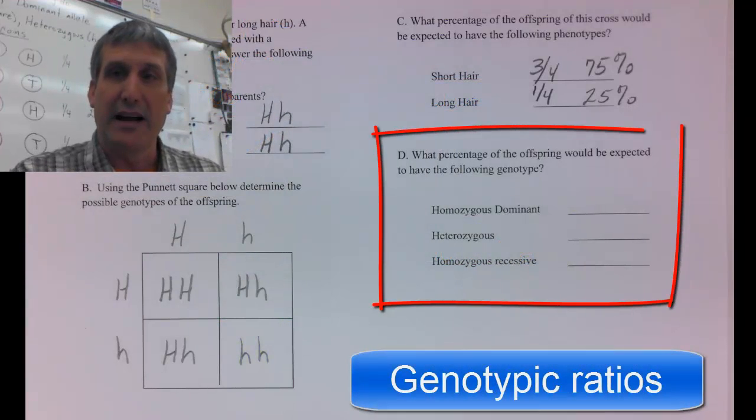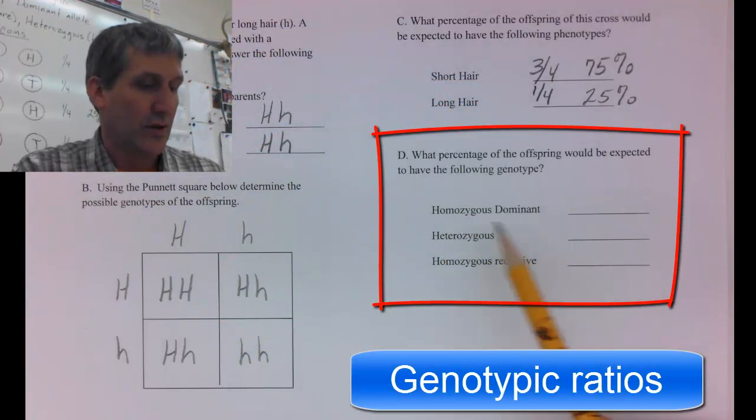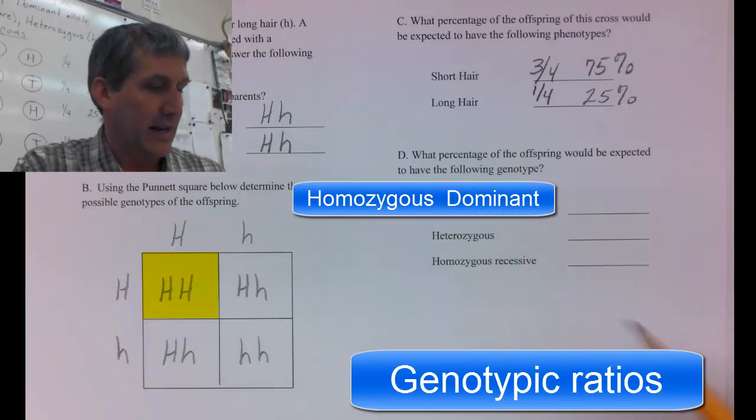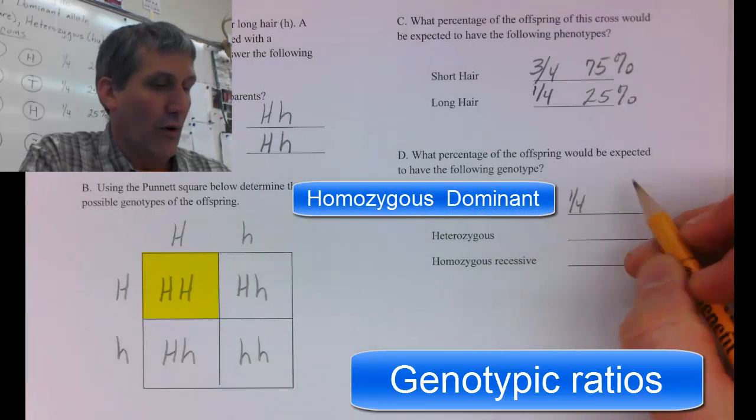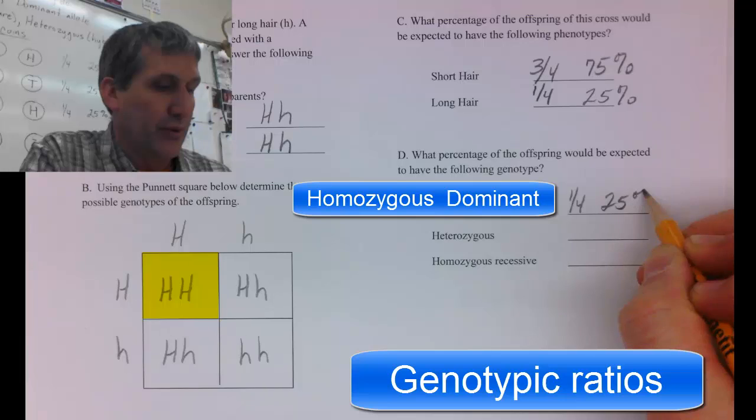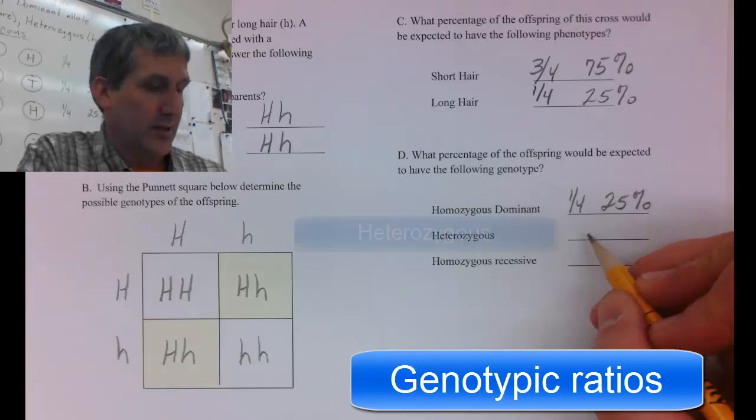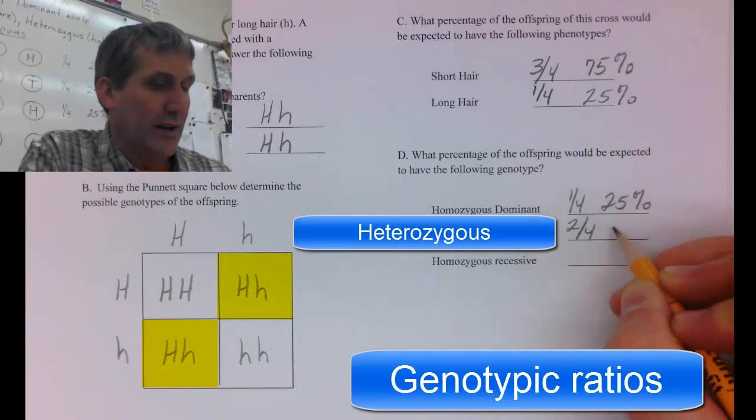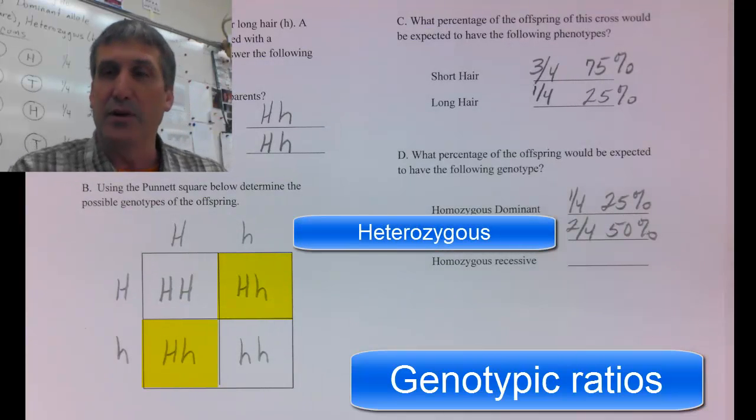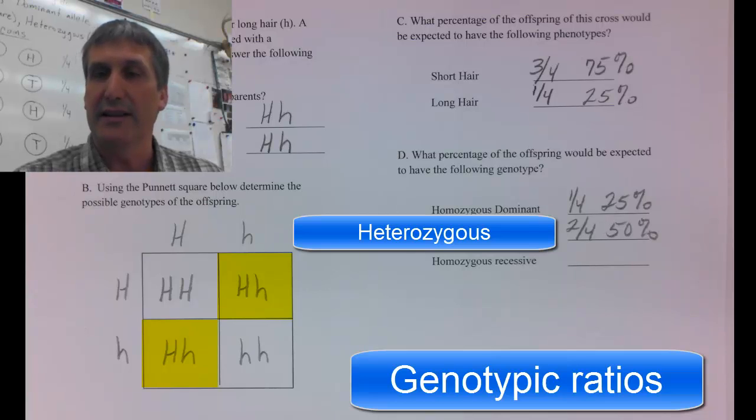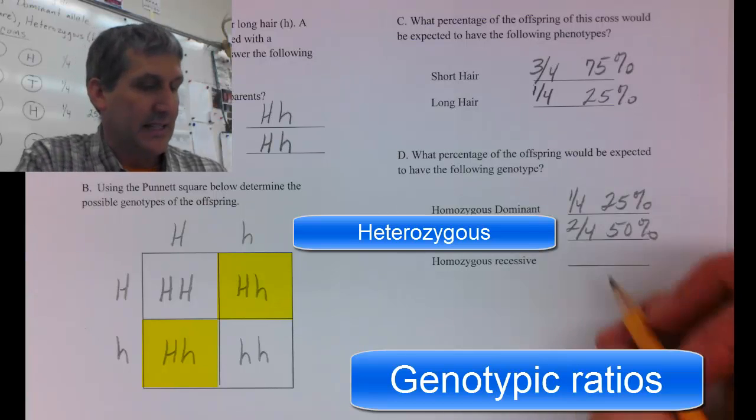You can also figure out the genotypic ratios. Homozygous dominant is one out of four times or 25%, you would expect the offspring to inherit the genotype homozygous dominant. Two out of four times or 50% of the time you would expect the offspring to inherit the heterozygous genotype.